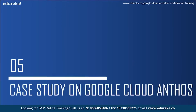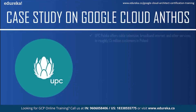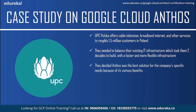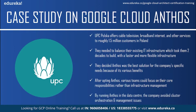Now let us take a look at a case study on Google Cloud Anthos. We will be talking about UPC Polska, a Polish telecommunication arm of Liberty Global Europe which offers cable television, broadband internet and other services to roughly 1.5 million customers in Poland. The problem they faced was they needed to balance their existing IT infrastructure, which took two decades to build, with a faster and more flexible infrastructure. They decided to opt for hybrid IT, which would give them the speed to market they needed while maintaining their existing infrastructure. They found that Anthos was the best solution because of the consistent experience across environments, agility enabled by modern CI/CD, and the ability to set policy and ensure security at scale.